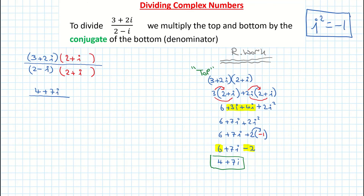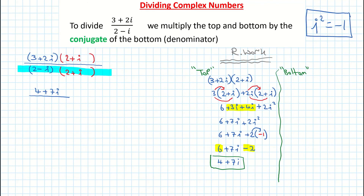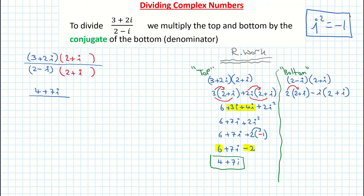Now I have to do the rough work for the denominator — the bottom of the fraction. We're multiplying 2 minus i by 2 plus i. It's the same principles: first term by second bracket. So 2 multiplied by 2 plus i, then the second term, minus i, multiplied by the second bracket.